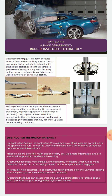Automobile crash tests are well-known examples of destructive testing. As you can see, there is a crash test of an aircraft taking place, and besides that, there is a tensile test specimen located to check the tensile strength of the material. These tests are basically carried out to identify the strength of the material and the prolonged endurance testing under operating conditions. They continue until the component, equipment, or product fails and is destroyed.